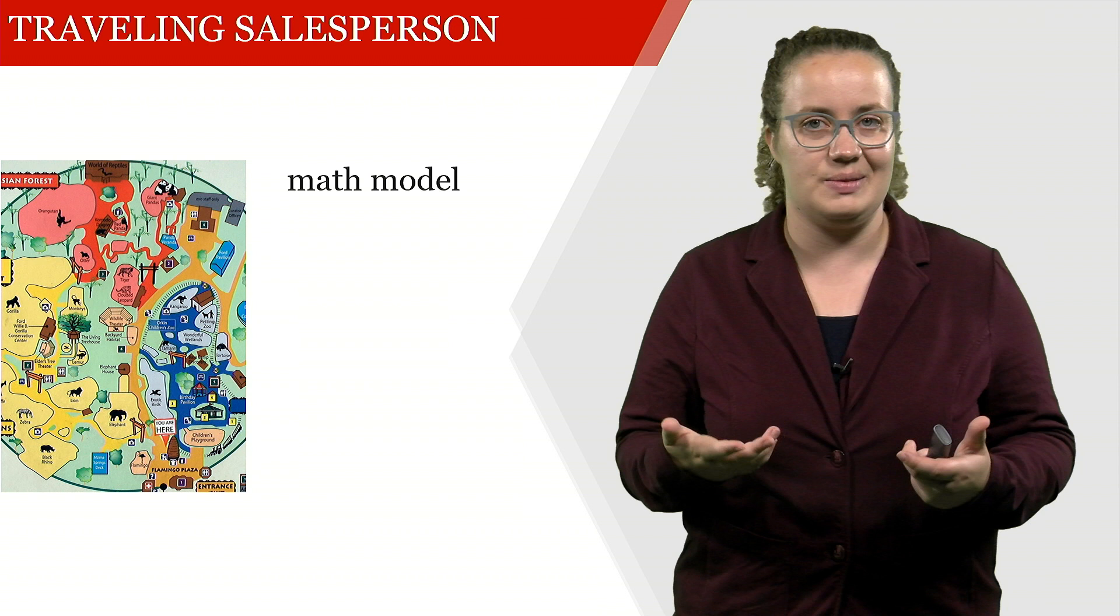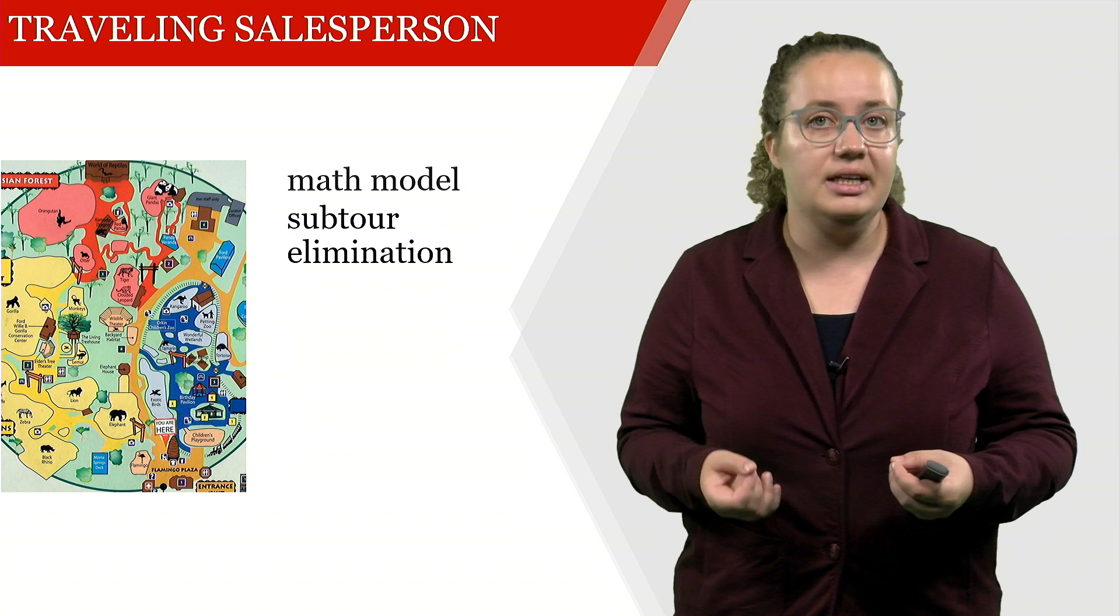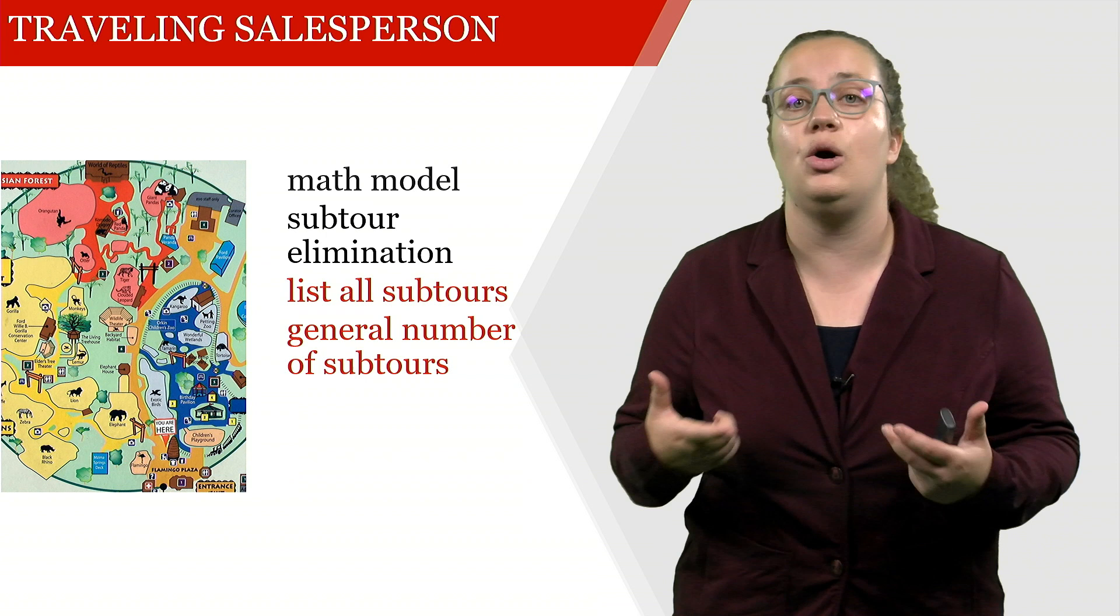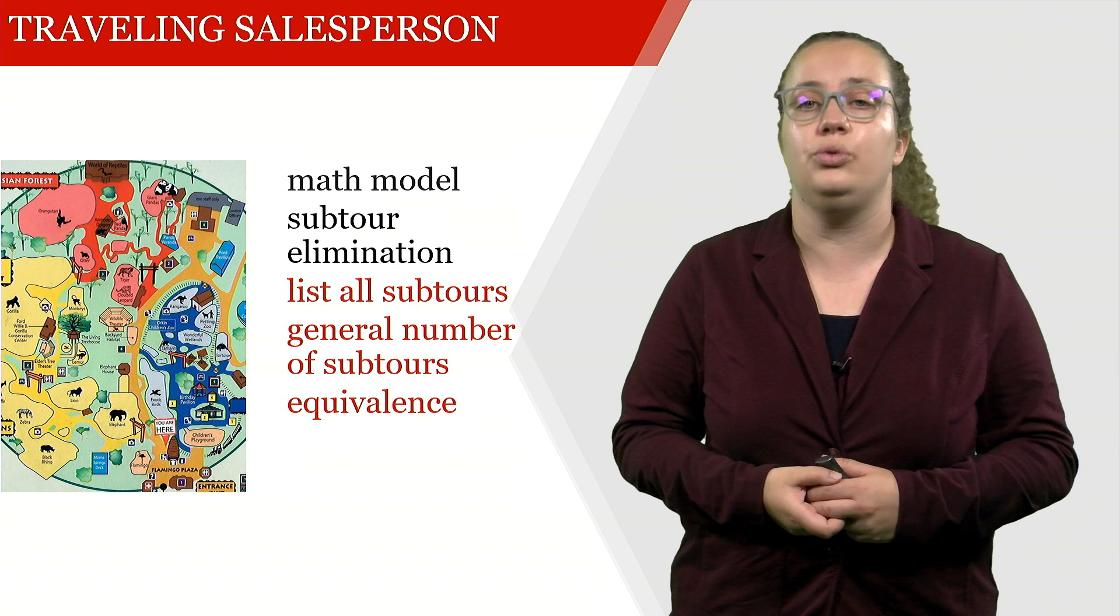And what I would like you to take away from this web lecture is, first of all, the mathematical model of the TSP with a particular focus on subtour elimination, particularly with the DFJ formulation. What I would like you to do is list all subtours, the general number of subtours, so calculate how many subtours there are, and I would like you to show the equivalence between the two formulations for the DFJ that we saw. And what we're going to look into next is the so-called nearest neighbour heuristic. Thanks.